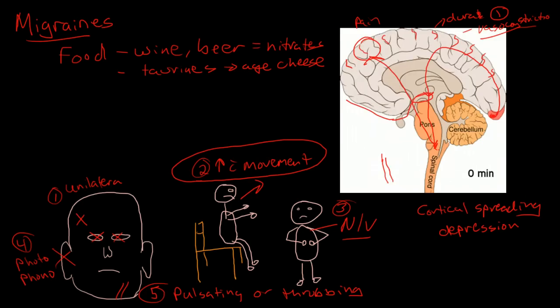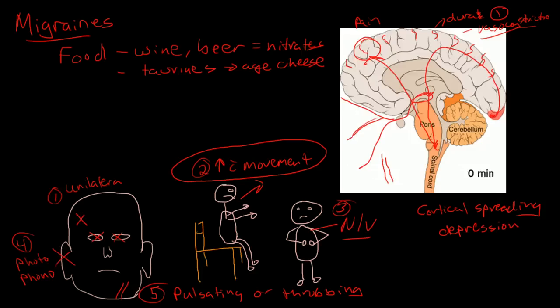And the trigeminal nerve has three branches—one goes up to the forehead, one goes to the cheek, and one goes down by the jaw. And the pain in migraines is typically, or very commonly, in the trigeminal distribution on one side of the head. And this appears to be due to direct stimulation of the trigeminal nerve from the thalamus.